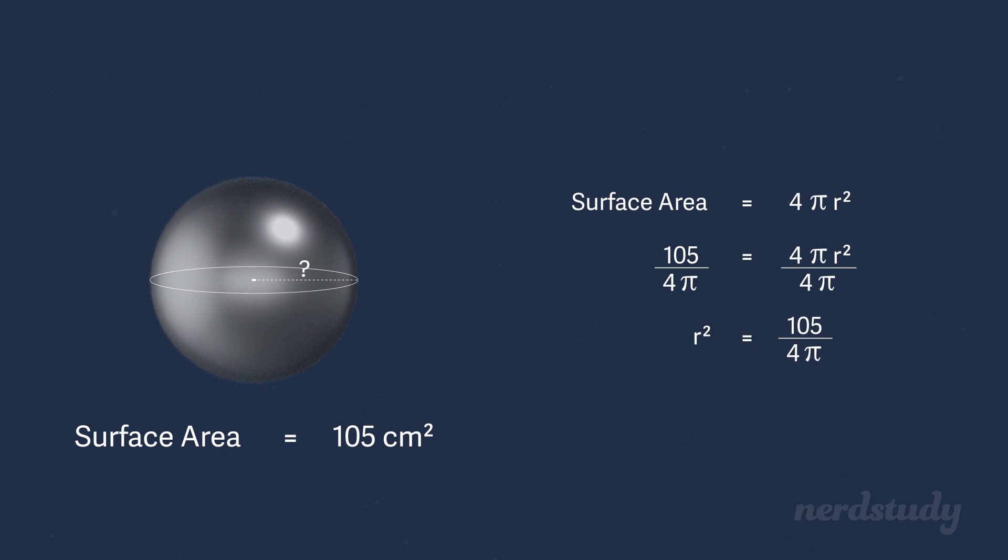We can rearrange the two sides and then square root both sides. If we simplify, we get a final result of r equals roughly 2.89 centimeters. Good.